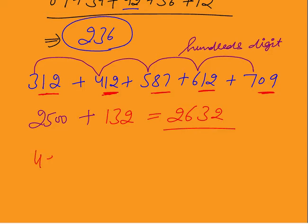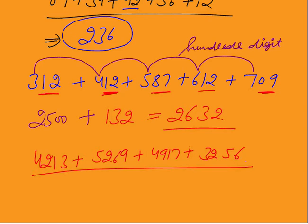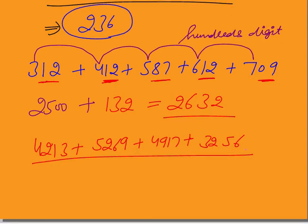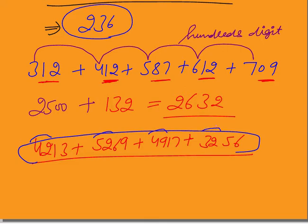What if 4-digit numbers come? For example: 4213 plus 5269 plus 4917 plus 3256. This is the maximum difficulty that can come in any exam. Again, add two digits at a time. Separate the thousands-and-hundreds portion: 42, 52, 49, 32 — we will add these first.